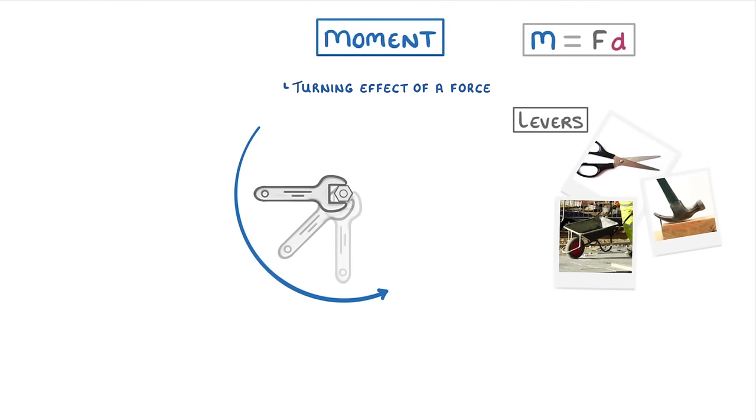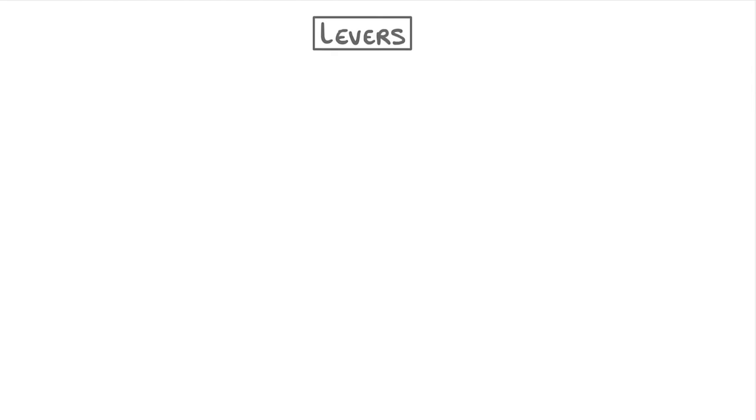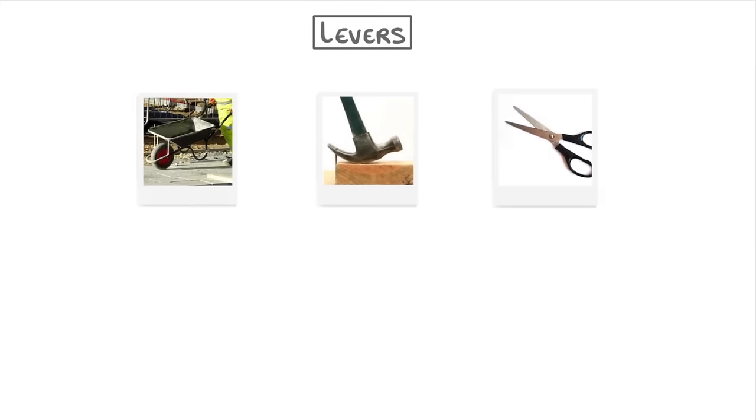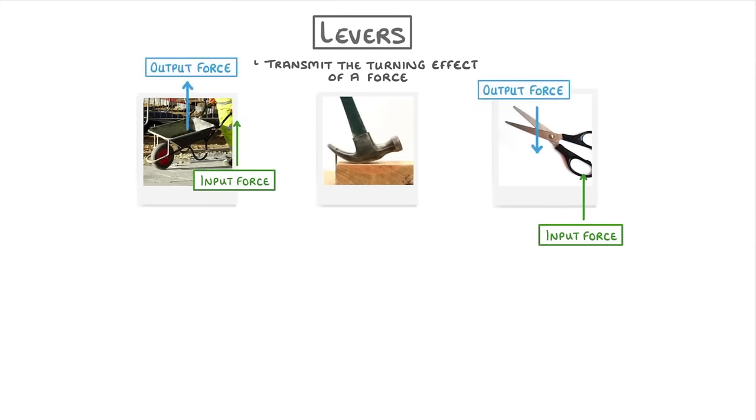Now there are loads of different types of levers, and even if you don't know how to describe it in physics terms, you've probably used the principle loads of times without even realizing. What all of these items have in common is that they transmit the turning effect of a force. So we apply an input force at one point, and this creates an output force somewhere else.